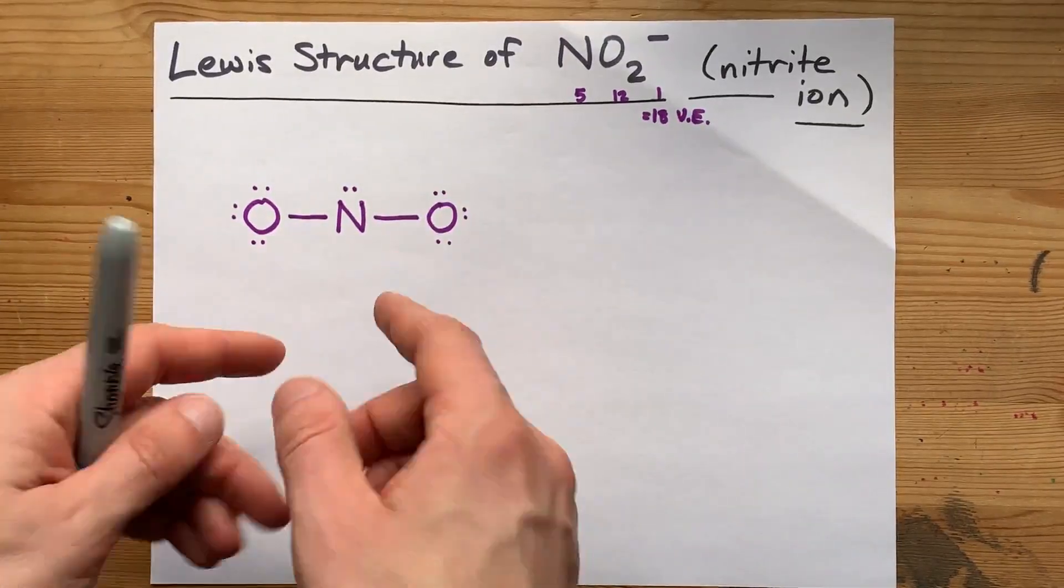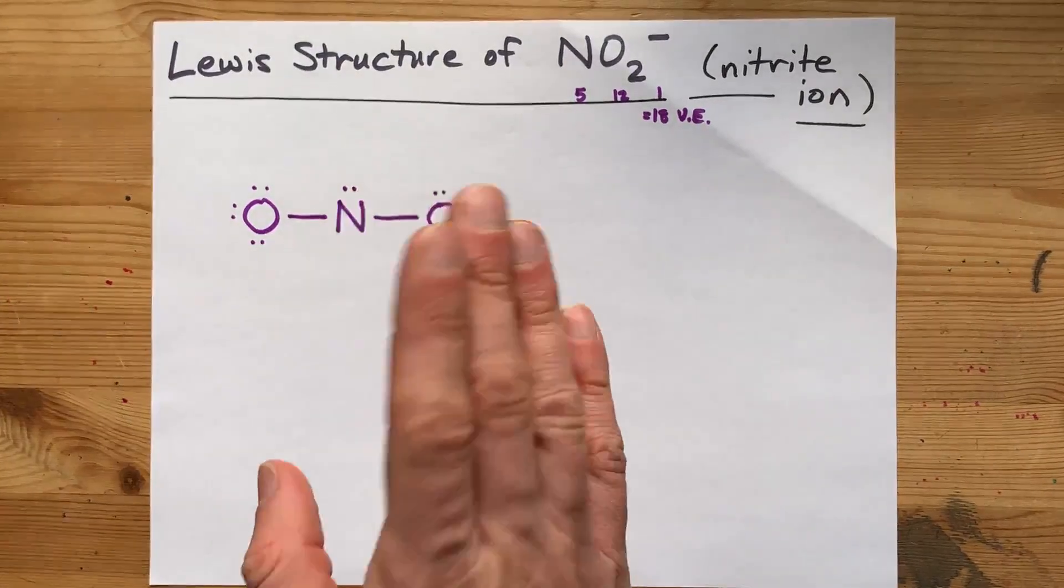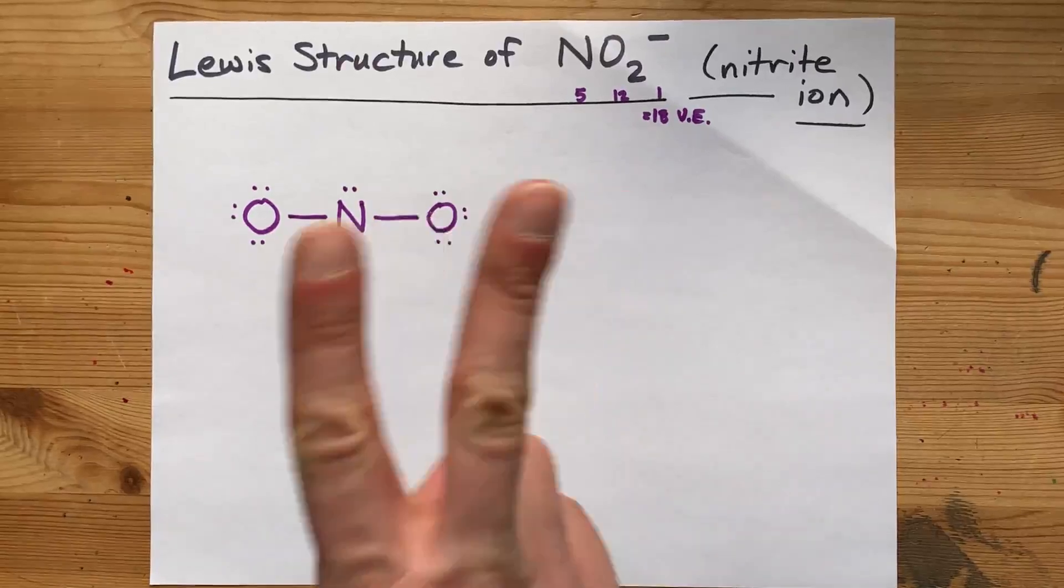Either of those answers will give nitrogen a full octet. And the official answer is, it happens from both.